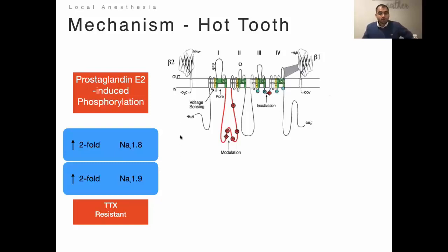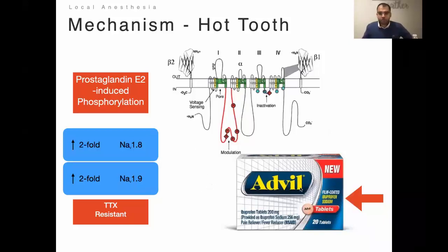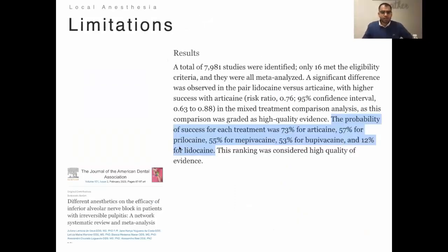Up-regulation of prostaglandins in inflammation causes phosphorylation of these sodium channels, turbocharging them and increasing resistance two-fold. One strategy to overcome this — discussed by Dr. Ken Hargreaves and studied by Kristin Sedgley at Oregon — is administering NSAIDs, specifically ibuprofen sodium (the salt form, Advil film-coated), prior to the procedure. This faster-absorbing formulation blocks prostaglandins and helps achieve more profound pulpal anesthesia, while also reducing post-operative pain.